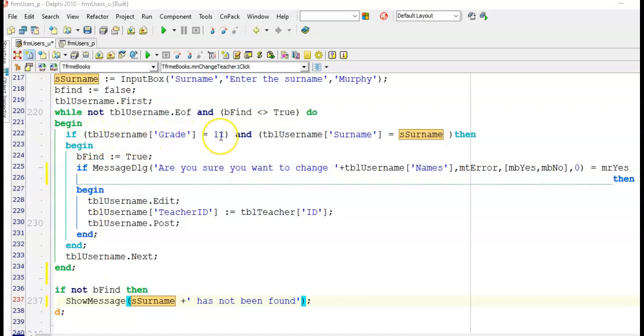My if statement here is looking for the grade 11 learner with this surname. And if I find it, I'm going to set bFind to true. Then I follow that with my message dialog box in an if statement to ask if the person wants to make a change to this user.